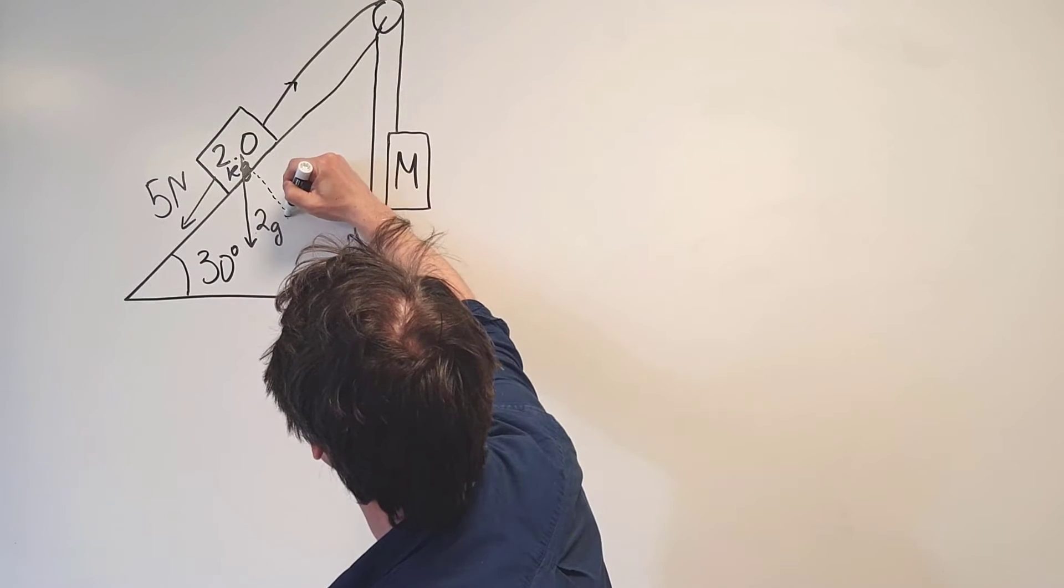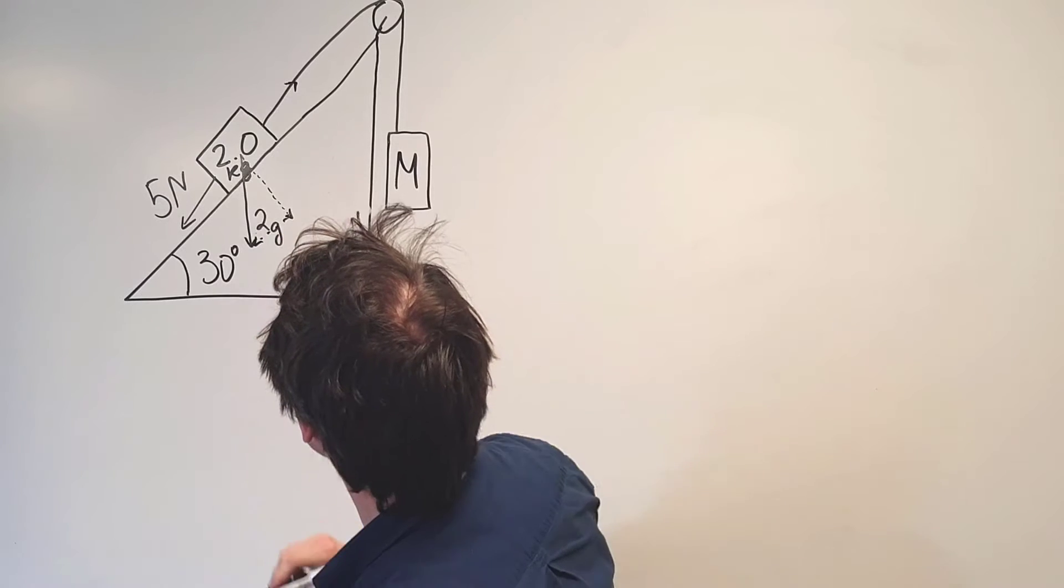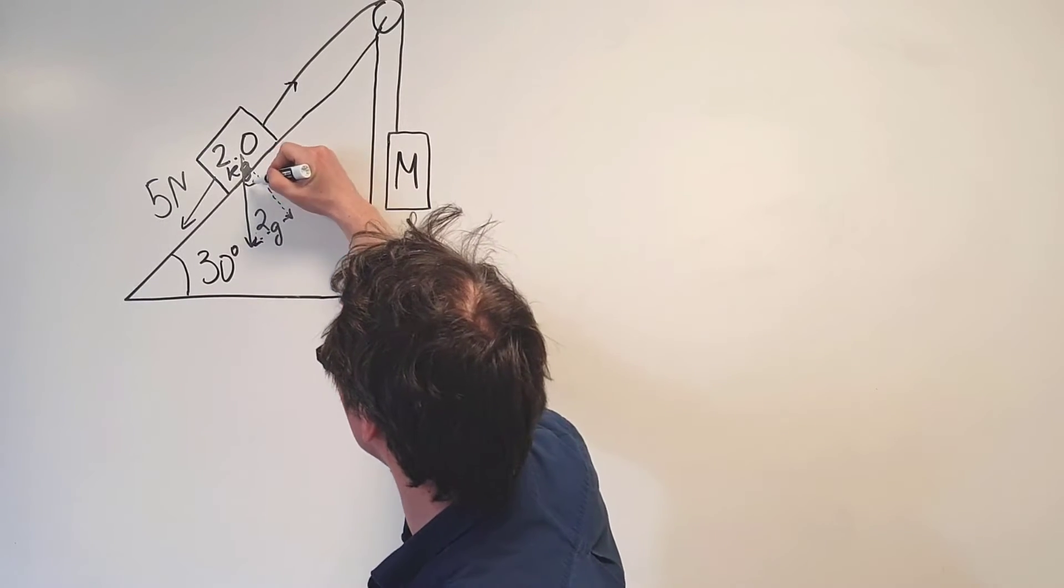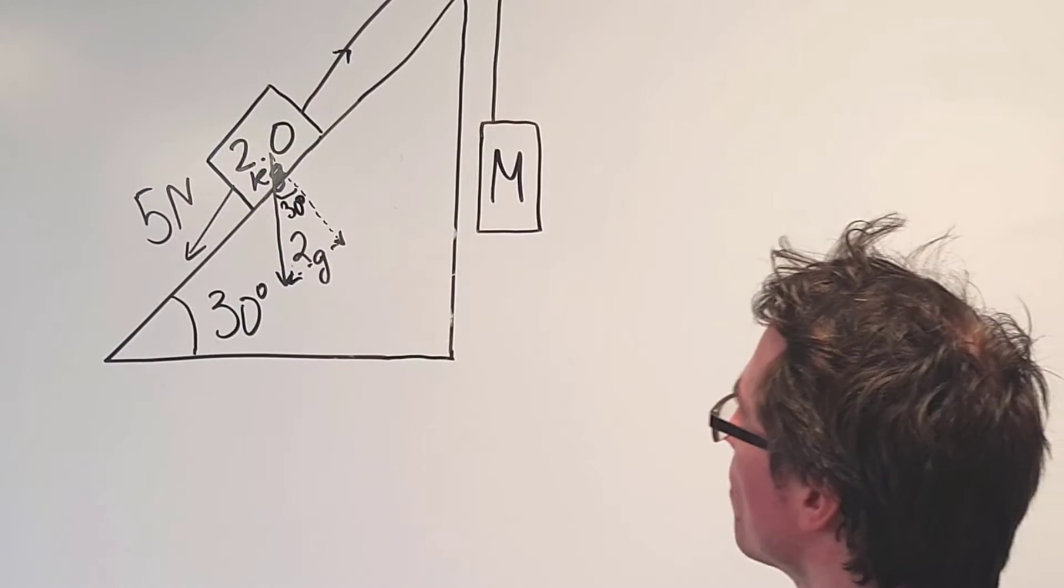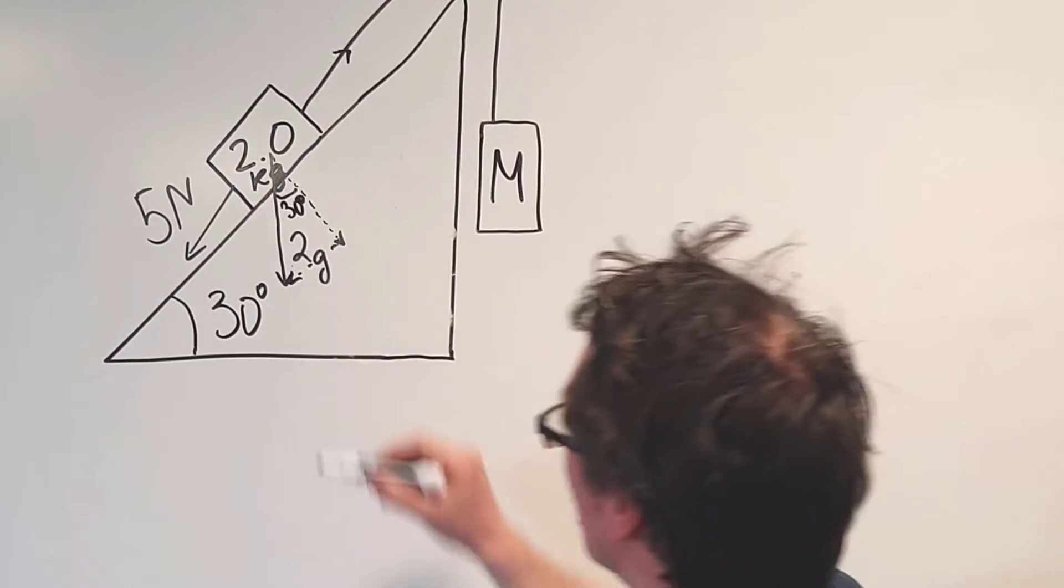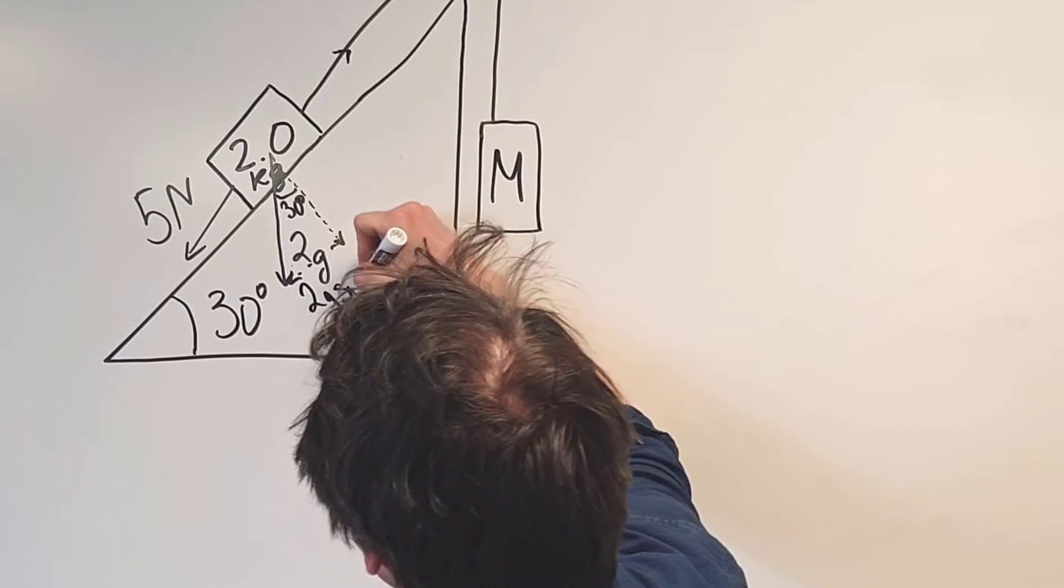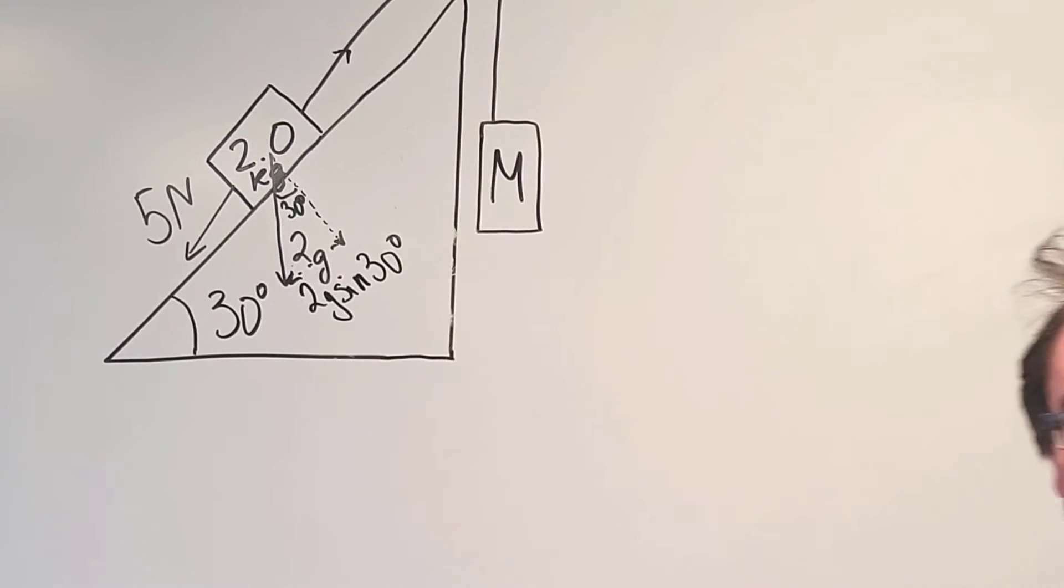Here's one component which is acting perpendicular and here's another component which is acting parallel. Now this angle here 30 degrees will be the same as this angle here, meaning that the component parallel to the slope will just be equal to 2g sine of 30 degrees.